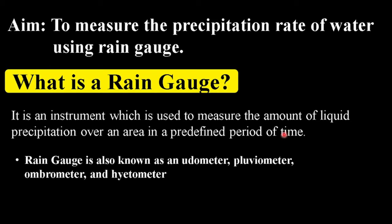Usually the depth of precipitation is measured in millimeters. The rain gauge is also known as a eudometer, pluviometer, ombrometer, and hyetometer.